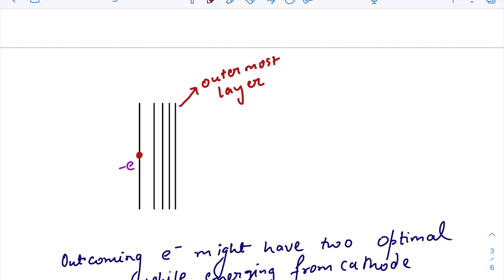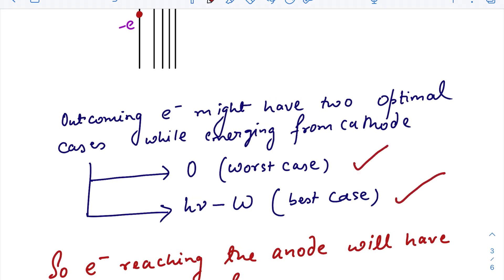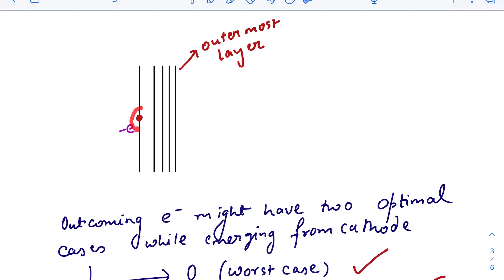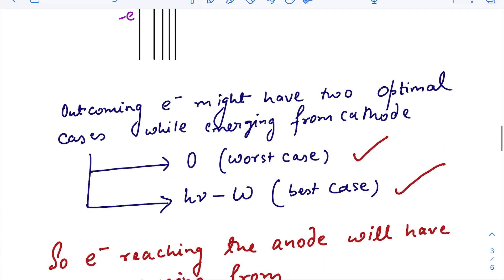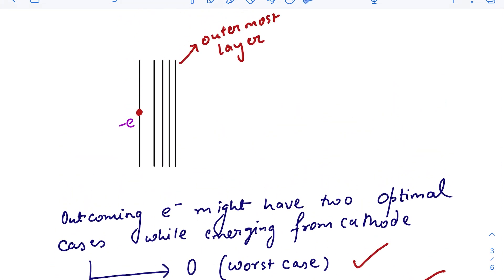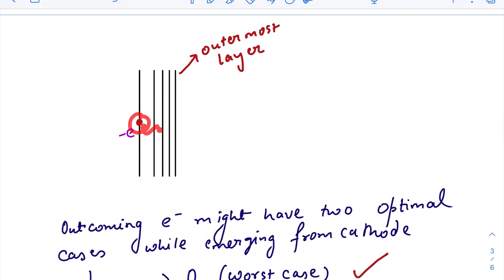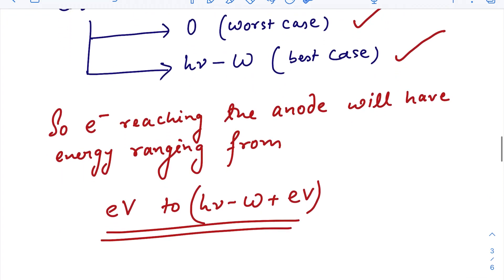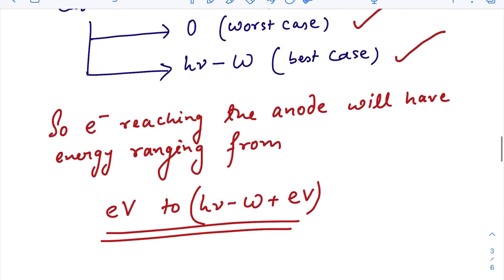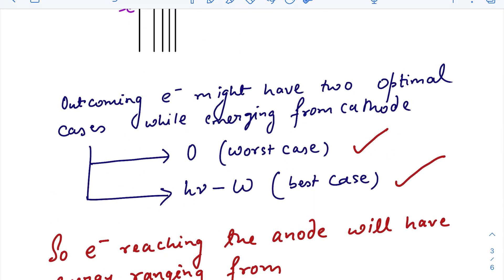There is a worst case and a best case scenario. In the worst case, all the energy of the excited electron is dissipated due to collision and it just reaches the outermost layer with zero kinetic energy. In the best case, it suffers no collision at all and comes out with the incident energy minus the work function — that is the maximum possible kinetic energy with which electrons can exit the cathode.